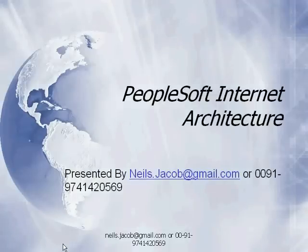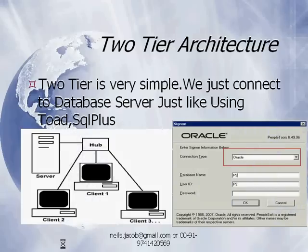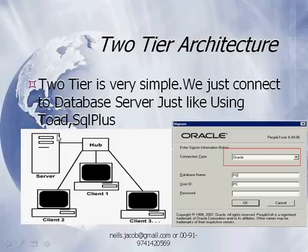First comes the two-tier architecture. Two-tier architecture is the simplest architecture we can ever think of. Here we can see that clients are easily connecting to the database server through Toad or SQL Plus. This is just like connecting through Toad or SQL Plus.